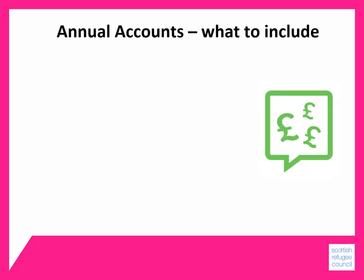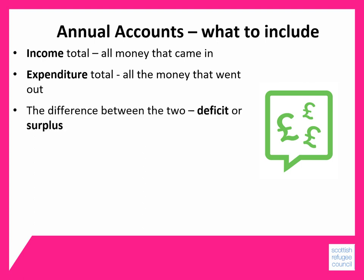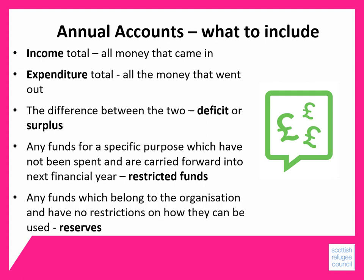So what to include in your annual accounts? You should include your total income — all the money that came into your organisation in the last year — and your total expenditure — all the money that went out. You should also include the difference between your income and expenditure. This will either be a deficit, when you've spent more money than your income, or a surplus, when you've brought in more money than you've spent. Your accounts should also detail what funds you have left, including any funds for a specific purpose not yet spent, called restricted funds, and any funds with no restrictions on future use, called reserves.